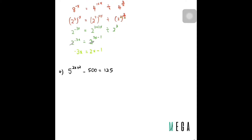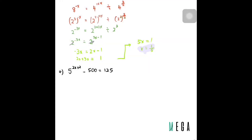So I get 2x + 3x = 1, which gives 5x = 1, so x = 1/5. Done for this question.